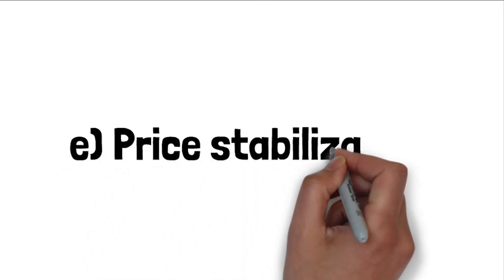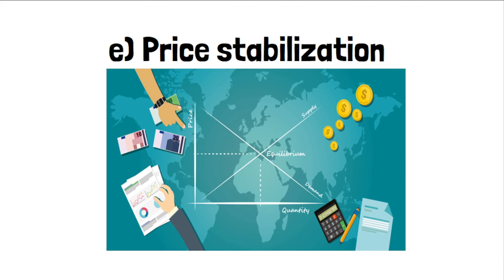The fifth function is price stabilization. Sometimes you may get a product at a very cheap rate — on those occasions, goods will be stored and released when the price normalizes or reaches equilibrium, based on economic supply and demand. For example, if tomato or onion prices are very fluctuating, goods are stored in warehouses to manage the demand situation, then released when there is high demand. When there is high supply and low demand, price falls, and vice versa.